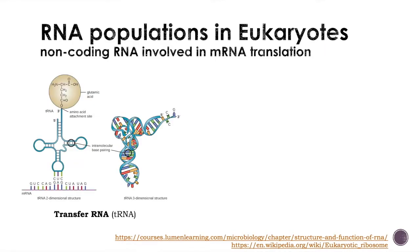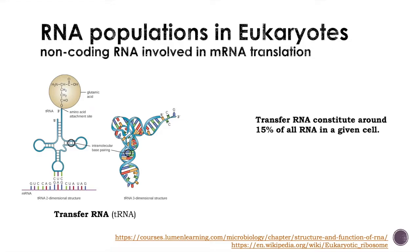In addition to ribosomal RNA, we can also find transfer RNAs, which are quite abundant — estimates suggest around 15% of all RNAs in a given cell are transfer RNAs. They participate in protein translation by providing a link between the messenger RNA and the amino acid, and are involved in the translation of messenger RNA into proteins.